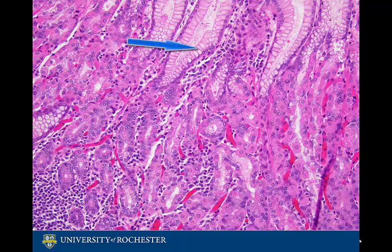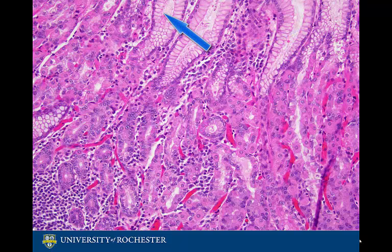Surface mucus, or foveolar cells, line the stomach and gastric pits. They produce mucus, which is critical in protecting the stomach against abrasion and acidity.